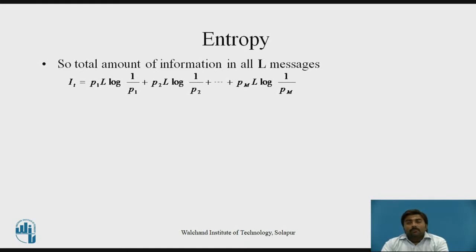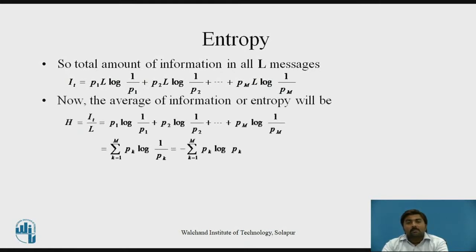So the total information is the sum over all m messages: p1·L·log(1/p1) for message m1, then message m2, up to message m. This gives the total amount of information in L messages generated in a particular time interval. Now if you divide this by L, that gives the average information, which is nothing but the entropy. Dividing by L cancels L from all terms, and the remaining general form for entropy is: H = summation of k from 1 to capital M of p(k) log(1/p(k)).